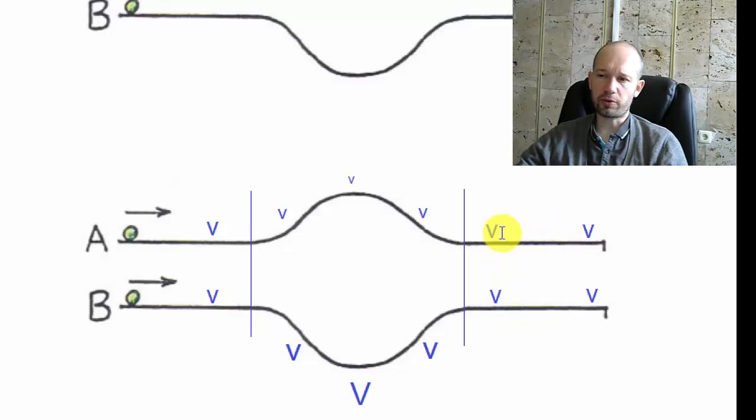Again, we're assuming there's no friction, so there's no loss of velocity just moving straight horizontally. The difference comes because of this middle portion. And I try to show what's happening with the size of the V that shows how big velocity is.